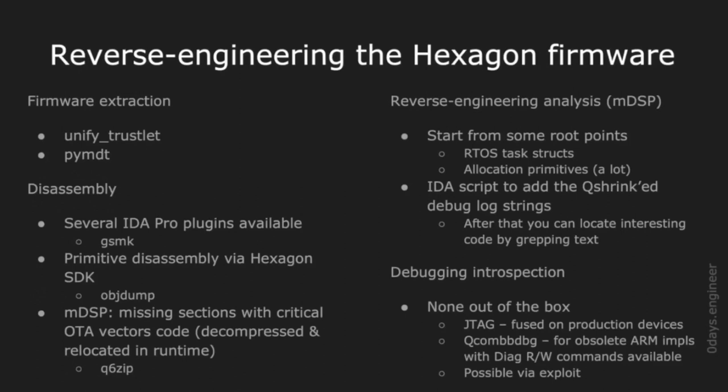I have partially reverse-engineered the Hexagon modem firmware from my Nexus 6P. The process is not very difficult. First, download the firmware from Google's website. Then find the binary corresponding to the modem firmware — it is a compound binary that must be divided into separate binaries representing specific sections inside the firmware, for which we can use the unified trustlet split script. After splitting the firmware into separate sections, load them into IDA Pro. Several IDA Pro plugins support Hexagon; I tried one — I think it was GSMK — and it works quite well for basic reverse engineering.